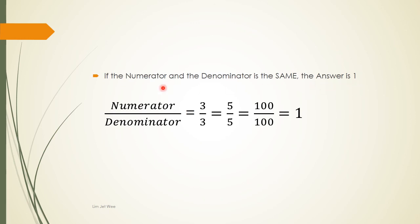Four over four is actually one, and that is how we get one whole piece. If the numerator and the denominator are the same, the answer is one. The numerator is the number on top and the denominator is the number at the bottom. So as long as the top and bottom numbers are the same, you get one. Three over three is one, five over five is one, even a hundred over a hundred is still one.